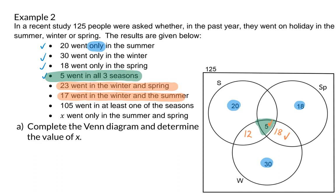We are also given that 105 people went in at least one of the seasons. Of the 125 people that we have in the study, 105 will then fall in at least one of these circles. And that means that 20 people lie outside these circles and did not go on holiday in any of the seasons.